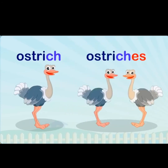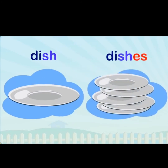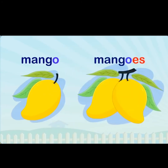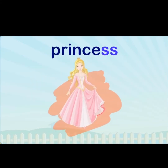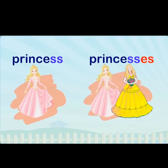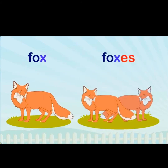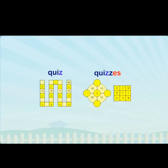For example: ostrich → ostriches, dish → dishes, mango → mangoes, bus → buses, princess → princesses, fox → foxes, quiz → quizzes. See, we have added -es.